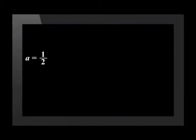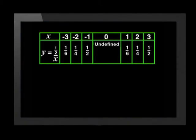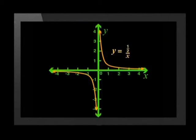What about a equals a half? Okay, then the formula would be y equal to a half divided by x. Here is the table of x and y values for this graph. Plotting the points in the table would give me this graph. Now, let's compare it with the parent graph.